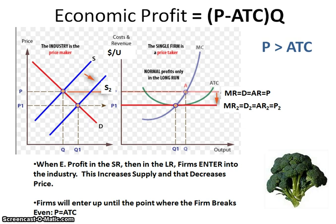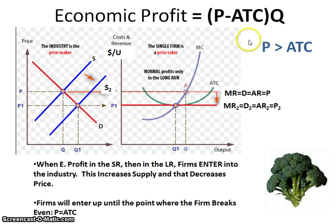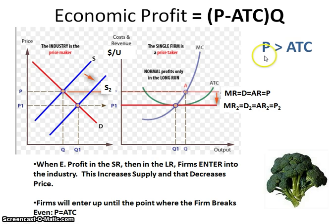What we need to look at is what's going on in the short run in order to get to this long run situation. In the short run, think of it like a snapshot of how the firm is doing. A perfectly competitive firm can either be earning economic profit or suffering an economic loss. To determine which, you use the formula: price minus ATC times quantity. If at the profit maximizing output of MR equals MC, price is greater than ATC, then the firm is earning an economic profit.